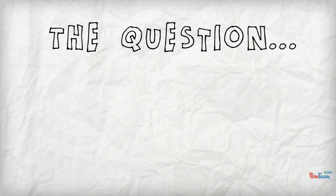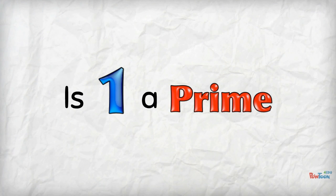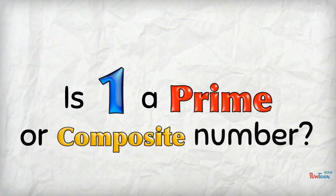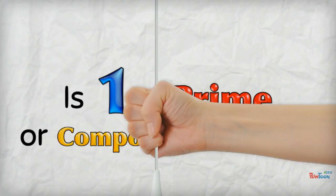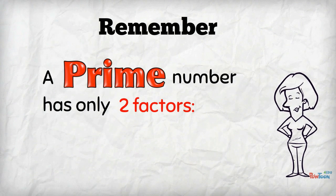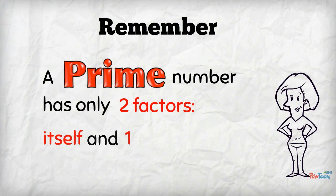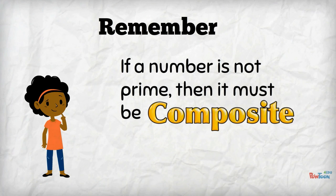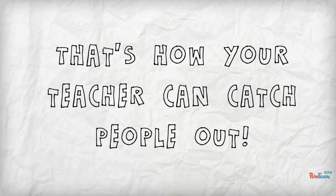Here's the question. What do you think? Remember, a prime number has only two factors: itself and one. If a number is not prime, then it's composite, right? That's how your teacher can catch people out.